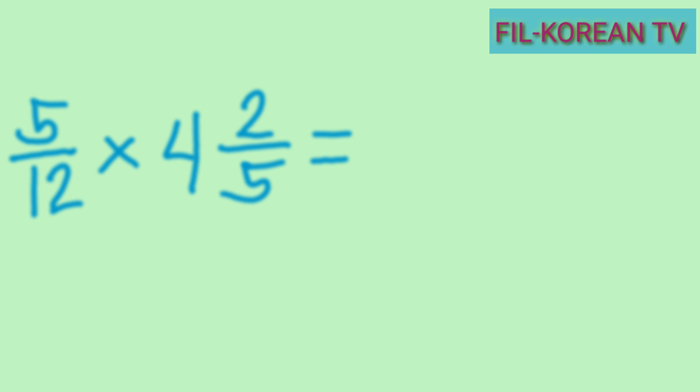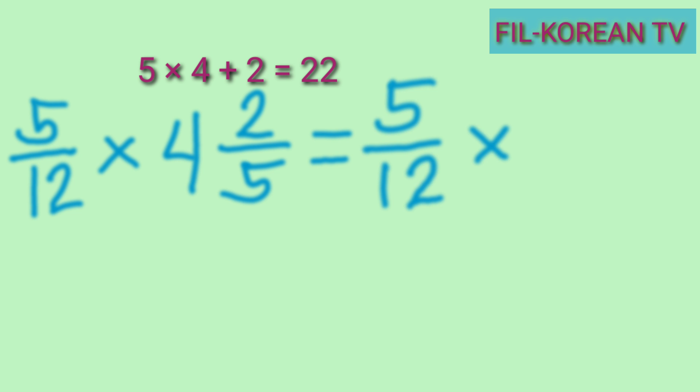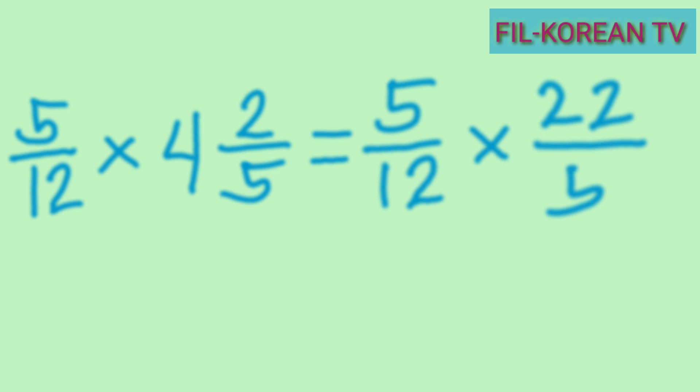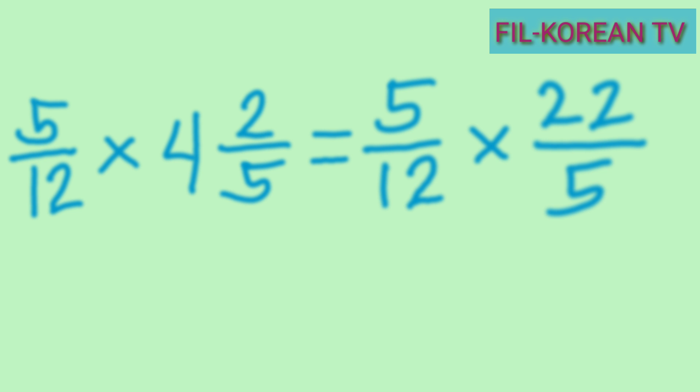For the second problem, we will use cancellation before multiplying. Let's answer five-twelfths times four and two-fifths. First, we change four and two-fifths into an improper fraction. Multiply the denominator five by the whole number four, then add the numerator two: five times four equals twenty, plus two equals twenty-two. So four and two-fifths becomes twenty-two fifths.